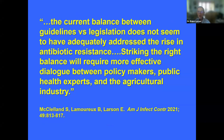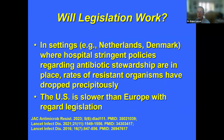We published a paper analyzing pieces of antimicrobial legislation. Of 20 pieces of legislation brought forward between 2011 and 2019, only 4 — 14% — passed. The common themes of those that passed were incentivizing new drug development, biodefense, expanded scope of use, stewardship, and stricter veterinary oversight. We concluded that the current balance between guidelines versus legislation does not seem to have adequately addressed the rise in antibiotic resistance, and that striking the right balance will require more effective dialogue between policymakers, public health experts, and the agricultural industry. In settings like the Netherlands and Denmark, where there have been strict policies and regulation about antibiotic stewardship, there is clear evidence that rates of resistant organisms have dropped precipitously.